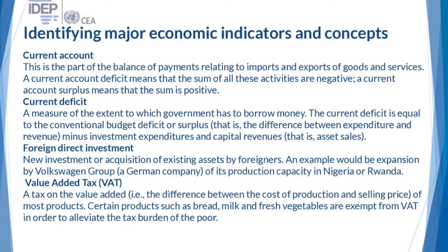A current account is part of the balance of payments relating to imports and exports of goods and services. A current account deficit means the sum of all these activities is negative; a current account surplus means the sum is positive. Current deficit is a measure of the extent to which it equals the conventional budget deficit or surplus — that is, the difference between expenditure and revenue minus investment expenditure and capital revenues, such as asset sales.